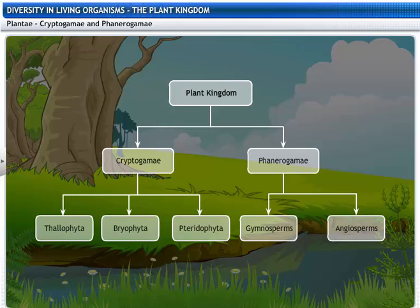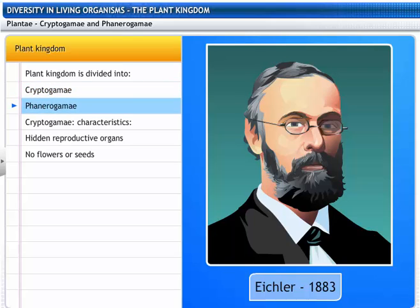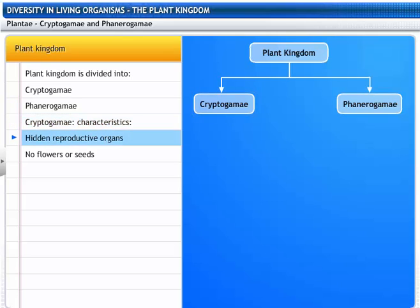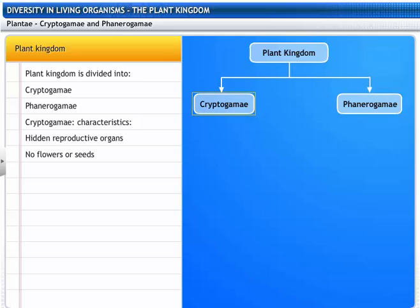Now, let's look at this classification in detail. In 1883, Eichler classified the plant kingdom into two sub-kingdoms: Cryptogamae and Phanerogamae. The sub-kingdom Cryptogamae includes plants with hidden reproductive organs. These plants do not bear flowers or seeds. Cryptogamae are further divided into three groups.